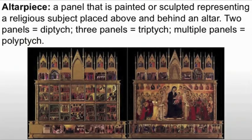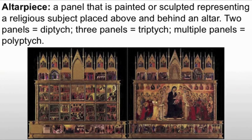What is an altarpiece? It is a panel that is painted or sculpted representing a religious subject, placed above and behind an altar. If it's two panels, it's referred to as a diptych; three panels as a triptych; and multiple panels is a polyptych. This would be a polyptych because each of those individual pieces is its own panel.